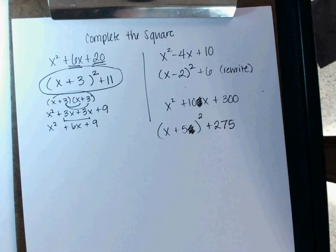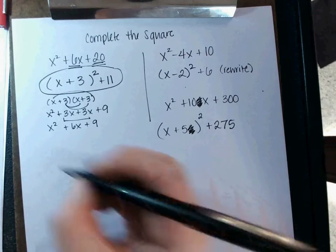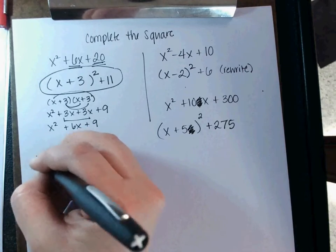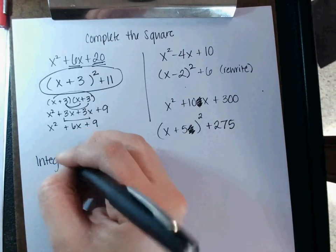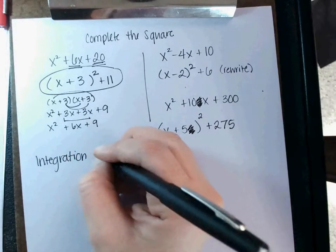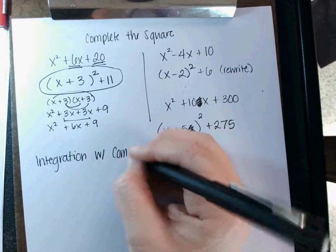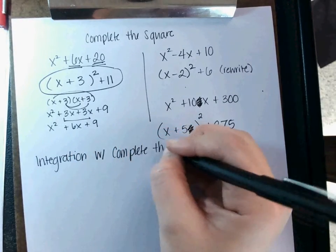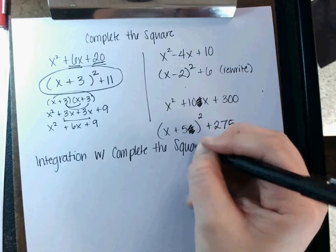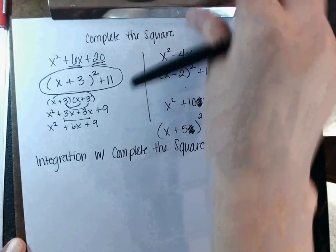In algebra 2, you used it in a process to solve, but we're not solving. Yep, I'm good. Okay, ready? So this is integrating with complete the square. Integration with complete the square. Okay, so here goes. Ready?